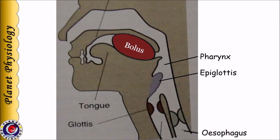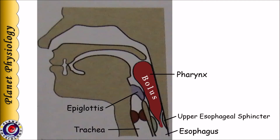Let us understand these events with the help of a picture. The pharynx has two openings superiorly and two inferiorly. The opening at the end of the oral cavity is the oropharynx, and at the end of the nasal cavity is the nasopharynx. Inferiorly, the pharynx opens into the trachea as well as the esophagus. During swallowing, pharyngeal muscles contract so that the bolus moves from pharynx to esophagus.